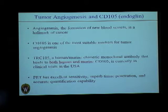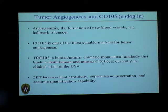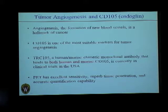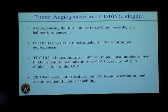The targeting ligand we use is TRC105, a monoclonal antibody that binds to both human and murine CD105. It is about to enter second phase clinical trials in the USA. Because PET is one of the primary imaging modalities for tumor detection, due to its excellent sensitivity, tumor penetration, and its ability to be accurately quantified, we will be using PET — positron emission tomography — as a major imaging modality for this project.